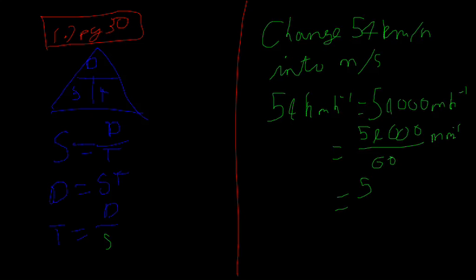Which is equal to dividing by 60 times 60, divided by 3600, which is then equal to 15 meters a second.